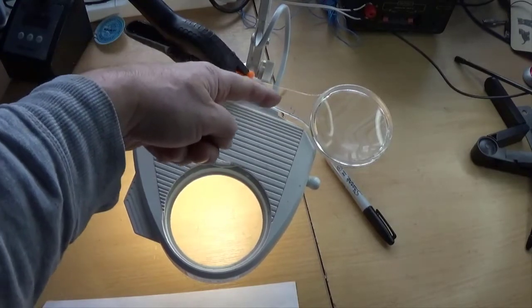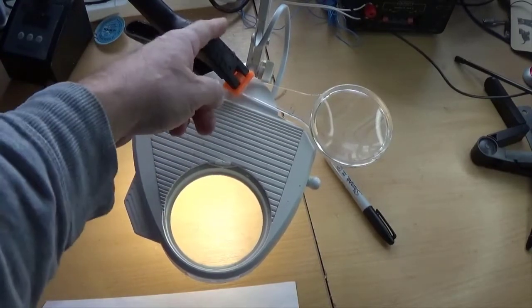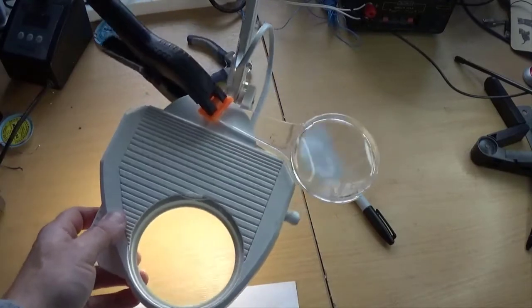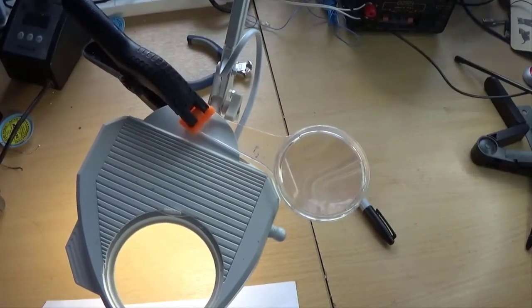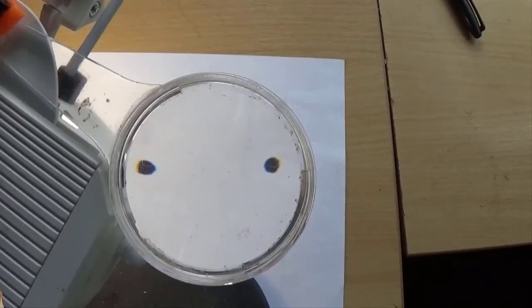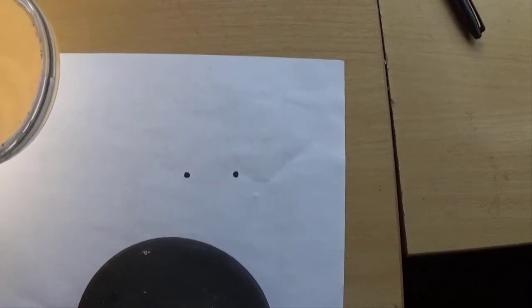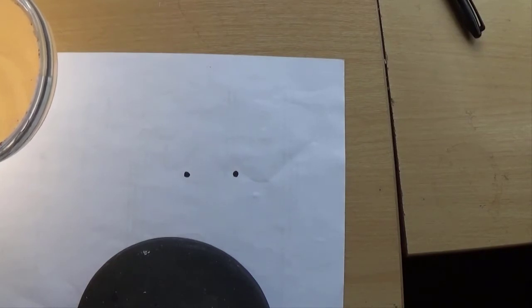Here we are. Handheld magnifier just clamped to the desk magnifier so we can use the arm, the adjustable arm from that to position it. I've drawn two new dots instead of the original lines because they needed to be a bit closer together. So here they are through the magnifier and if I put the magnifier out of the way there they are unmagnified. So I shall now do the same procedure and we shall see what the magnification is through that handheld magnifier.